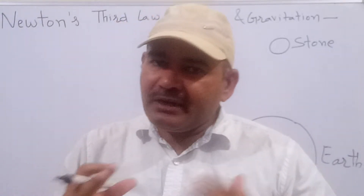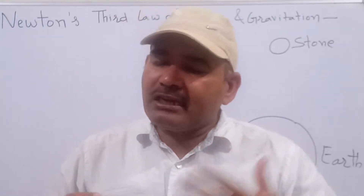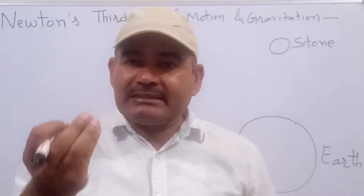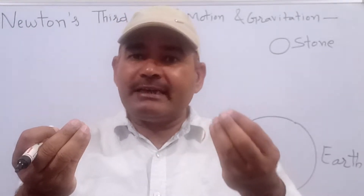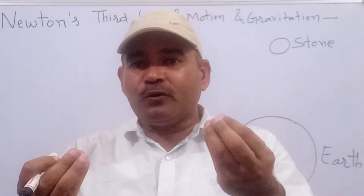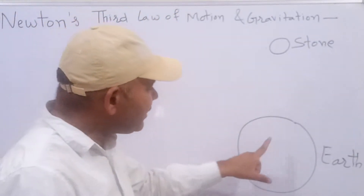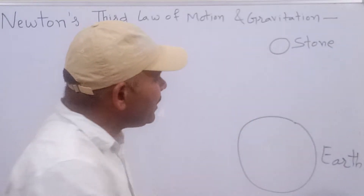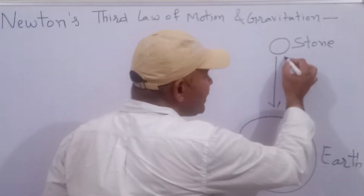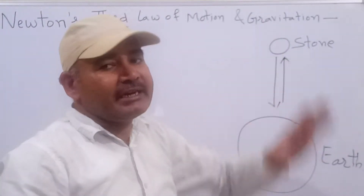Hello students, today we will discuss about Newton's third law of motion and gravitation. What is Newton's third law of motion? When an object exerts force on another object, then the second object also exerts equal force but in opposite direction.